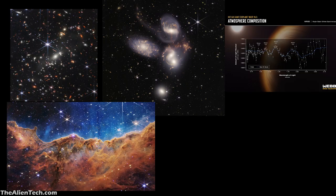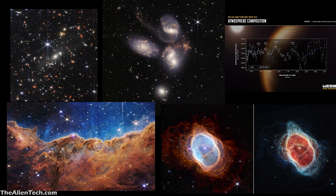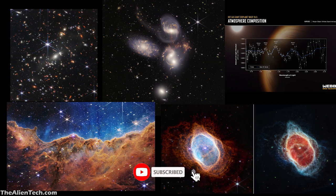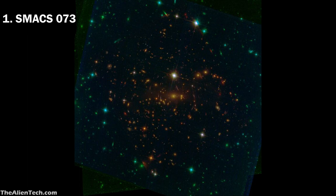NASA has released five images taken by Webb. Let's see the details of these images and how they are different compared to the Hubble Telescope. The first image is of Galaxy Cluster SMACS-73.